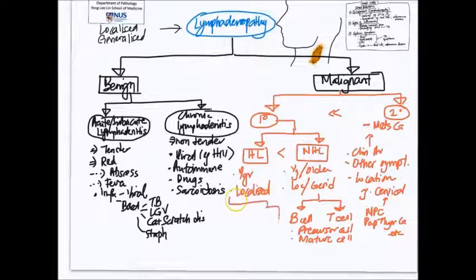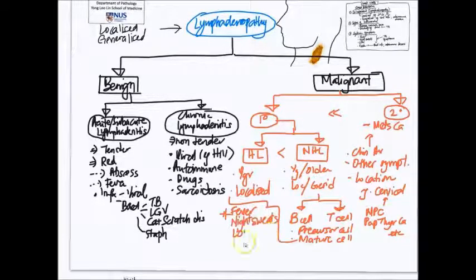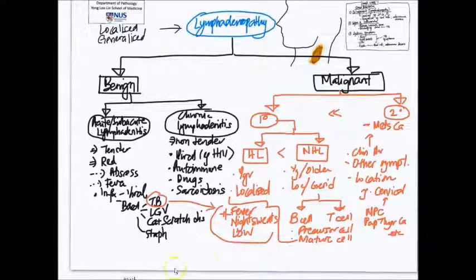How else do lymphomas present in addition to lymphadenopathy? Well, they can also have some systemic symptoms such as fever, night sweats, as well as loss of weight. So it's important to remember that these symptoms, sometimes known as B symptoms, not only can be caused by lymphoma, but they can also be seen in tuberculosis. So both of these can result in systemic symptoms.